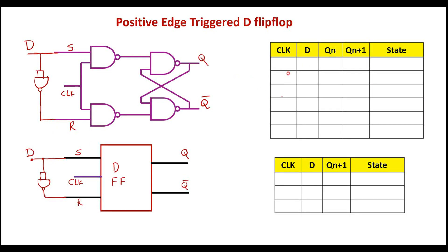Now let me write the truth table. When the clock signal is 0, if D input is 0 or 1 — that is, don't care — the state will be no change. We call Qn as present state and Qn+1 as next state. If present state of the flip-flop is 0, then next state will be 0. If clock is 0, irrespective of input, if present state is 1, then next state will be 1 — that is, no change.